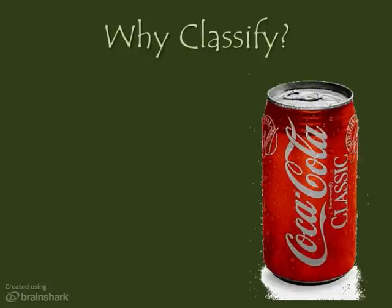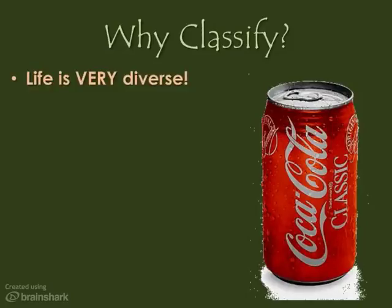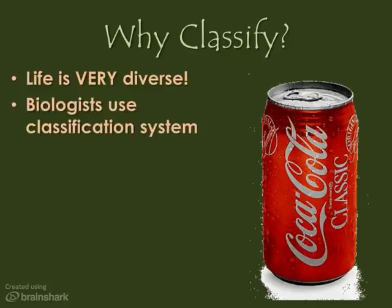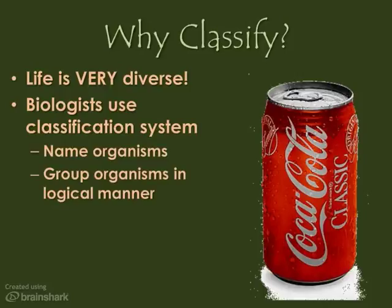If someone asked you if you would like a tonic, would you expect a can of Coke? What if someone offered you a pop, a soda, a Coke? We have different names for the same thing and it often leads to some amusing confusion. But in the biological world, confusion is not amusing. Life is very diverse and we have a need to make sense of it. If you think about how things are arranged in and around your house, chances are very good that you have several classification systems in place. A classification system allows for the naming and grouping of items in a very logical manner.